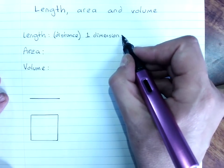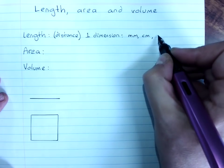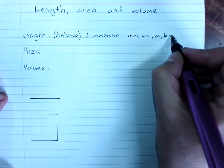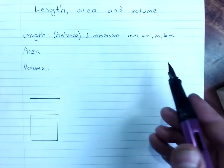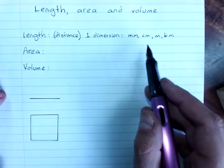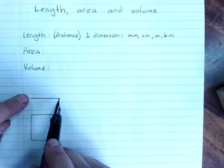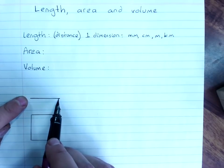Our units of length are millimeters, centimeters, meters, kilometers, and of course there's some others that we often use as well, but these are our main ones. So, it's just from here to here, along one dimension, how long is that?